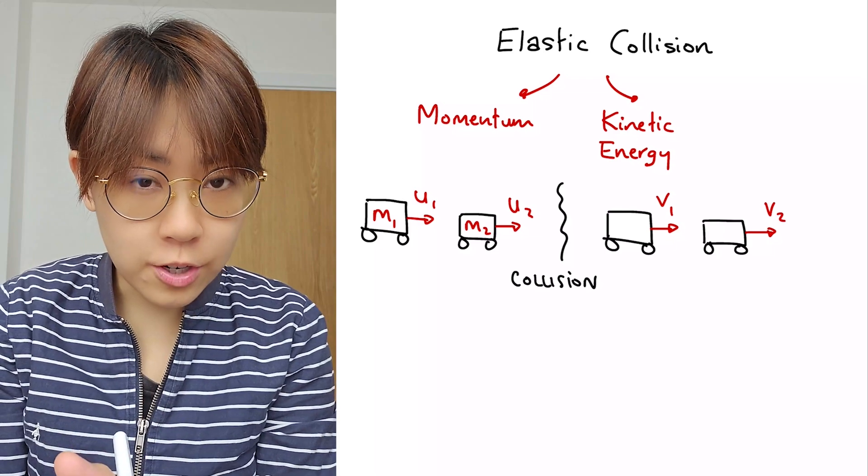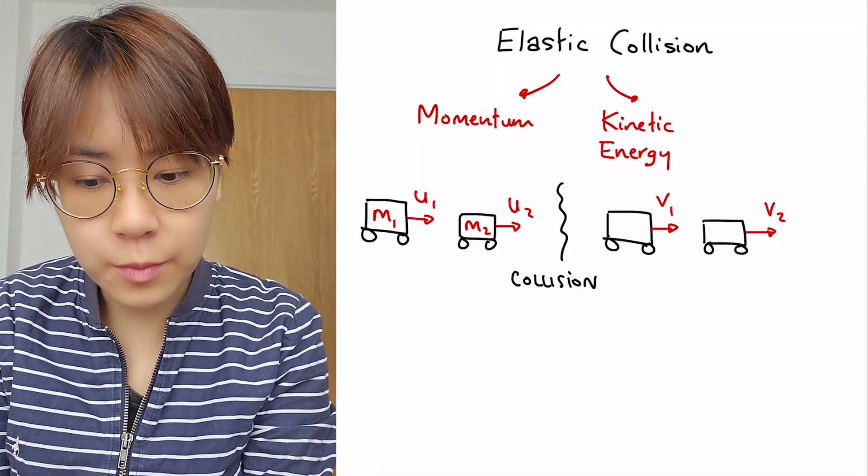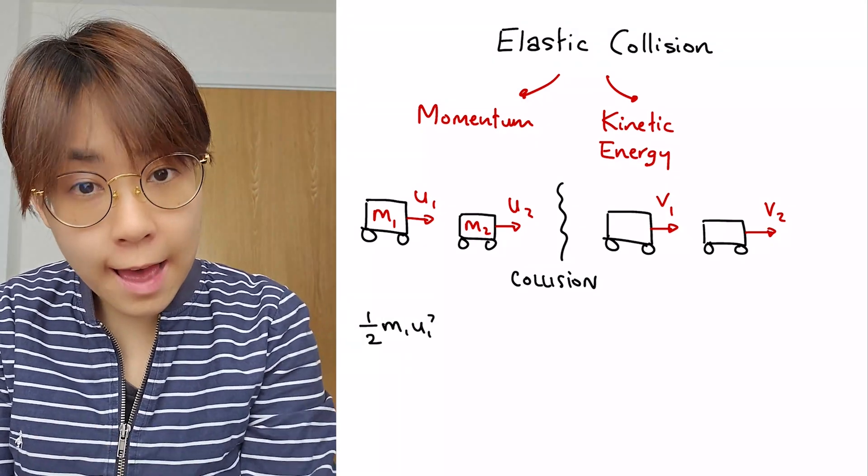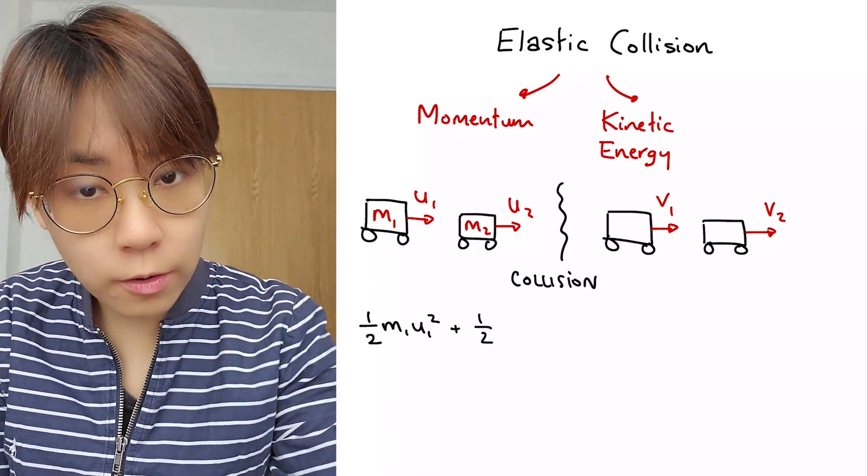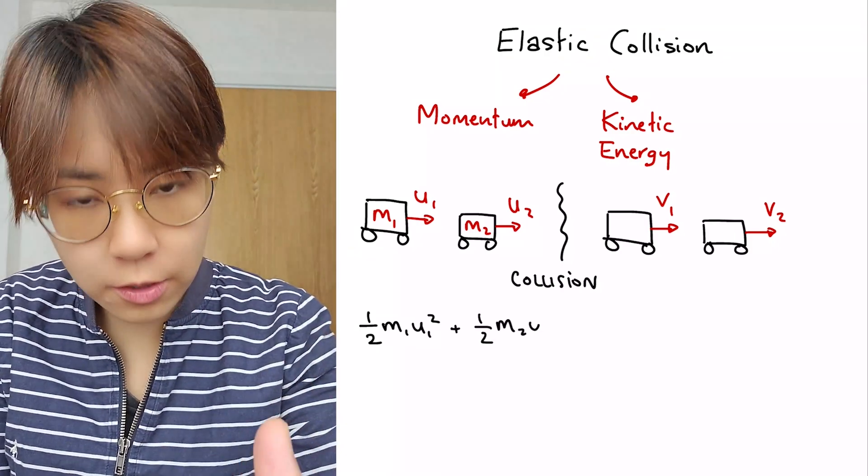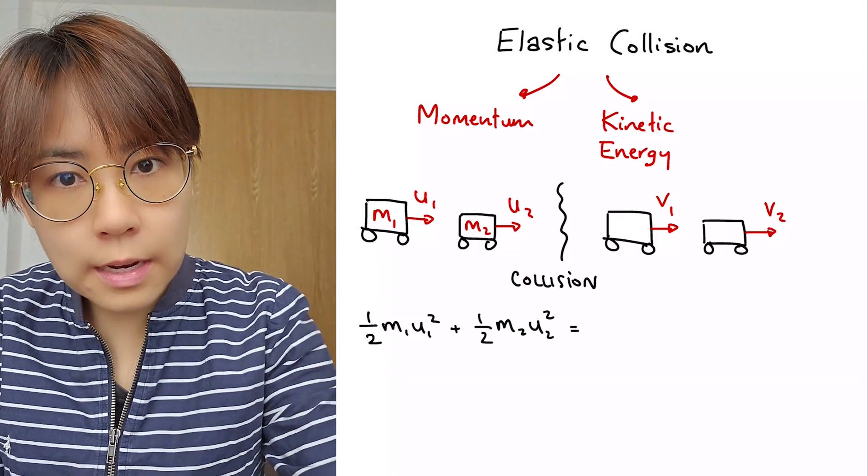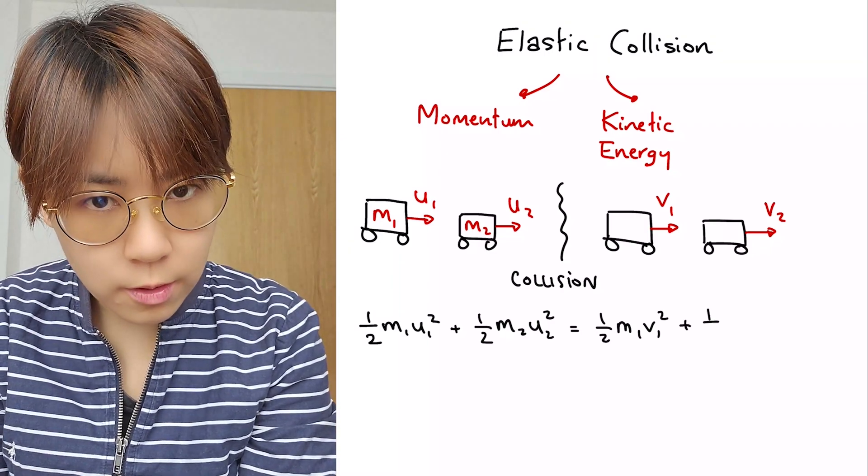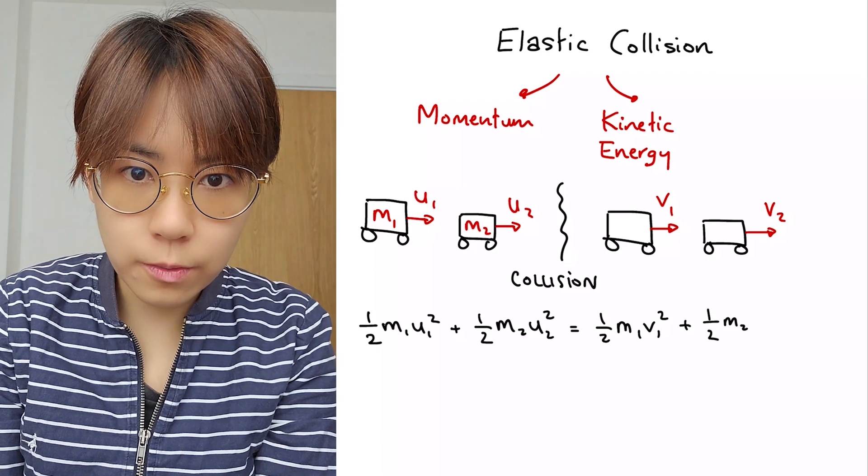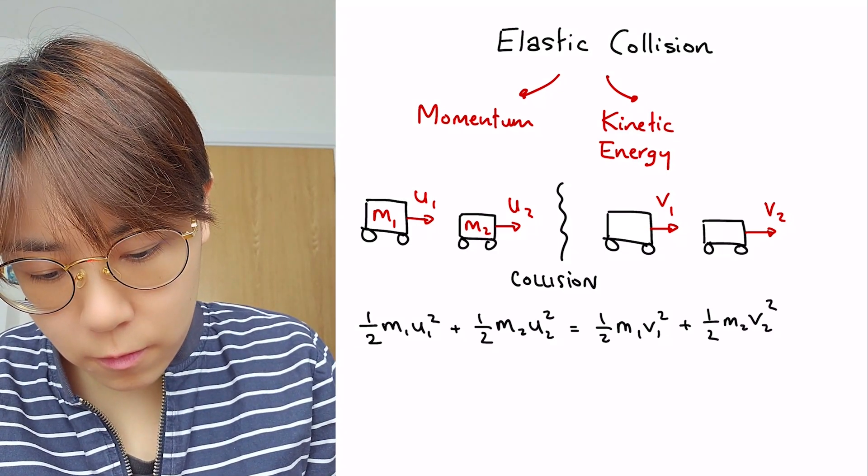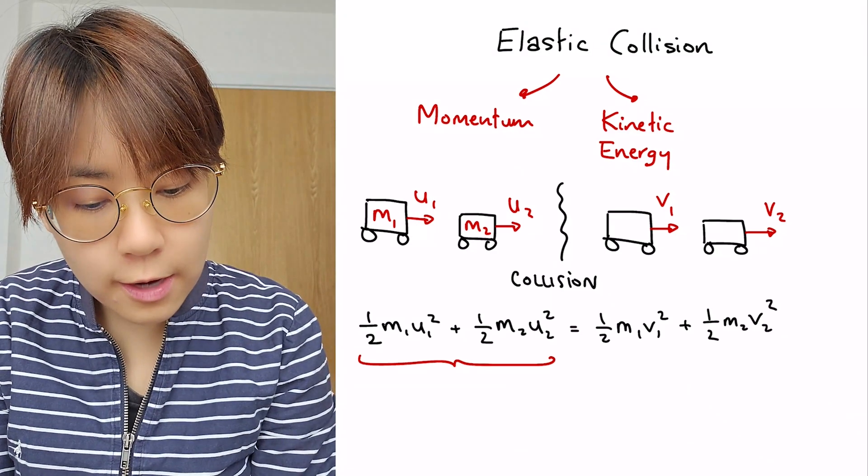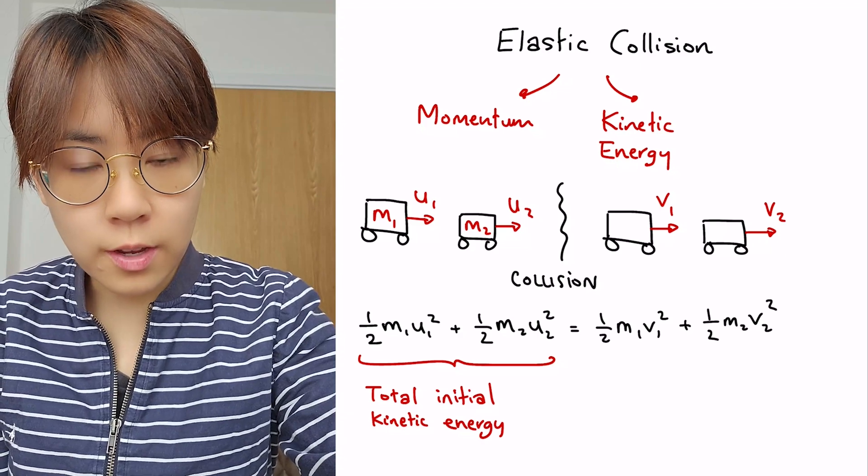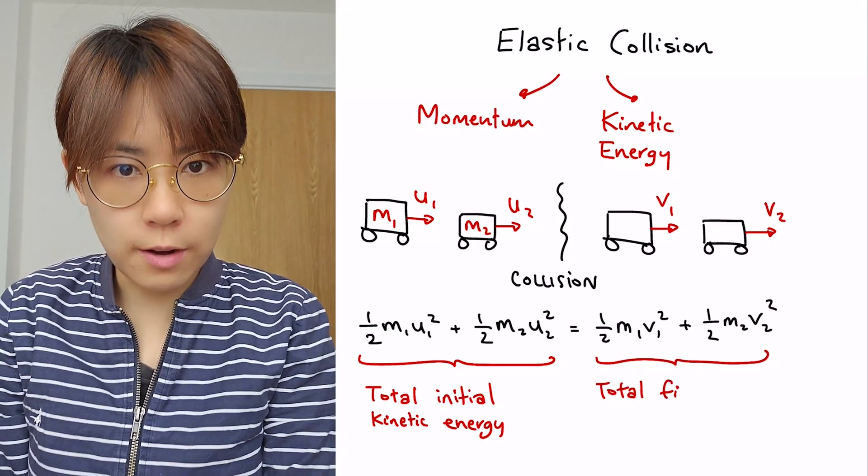Remember kinetic energy is given as half times mass times velocity squared. So we can express the initial kinetic energy as a half m1 u1 squared plus a half m2 u2 squared. This equals the final kinetic energy, which is a half m1 v1 squared plus a half m2 v2 squared. The left-hand side of this equation is the total initial kinetic energy, whereas the right-hand side of the equation is the total final kinetic energy of the system.